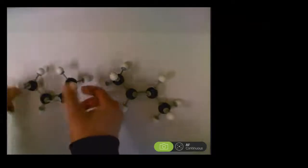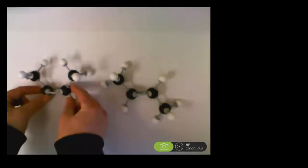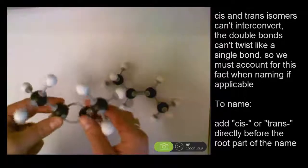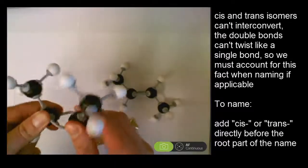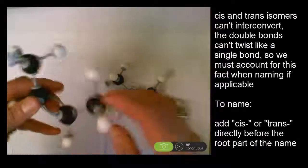Now, have a look, you can see that if I build a couple models here, I can't twist or turn the cis isomer into the trans isomer, okay, they cannot interconvert, so you need to account for this when naming.